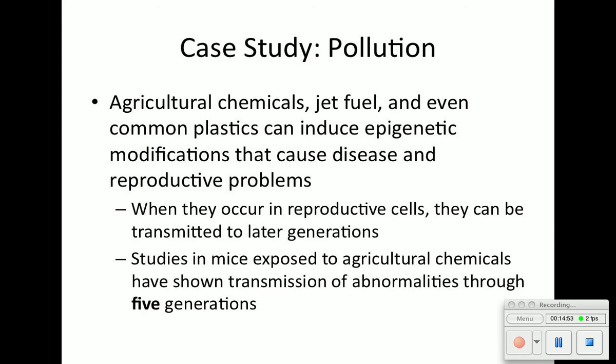In the case of pollution, chemicals like jet fuel and even common plastics can induce epigenetic modifications. You may have heard of BPA and how it can affect your gametes and cause cancer — and it's true. When these modifications occur in reproductive cells, they can be transmitted to later generations. Studies on mice exposed to agricultural chemicals have shown that anomalies are passed on through at least five generations.